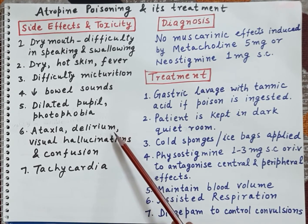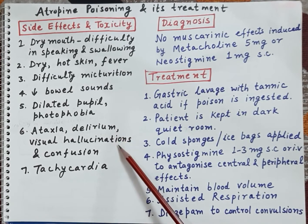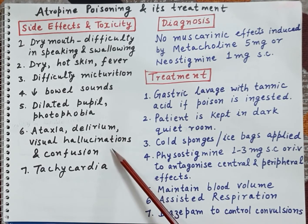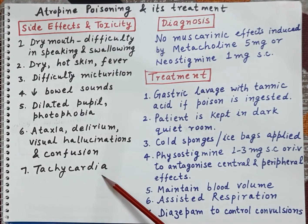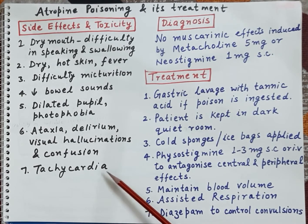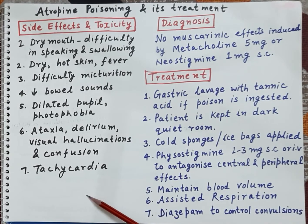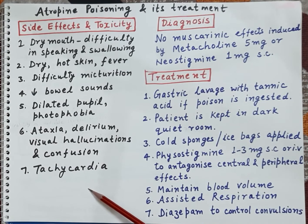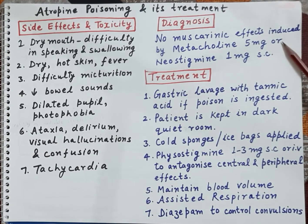Apart from this, atropine causes ataxia — that is inability to coordinate skeletal muscles — and it further produces delirium, visual hallucinations, confusion, and tachycardia. These are the side effects and toxicity symptoms of atropine poisoning.